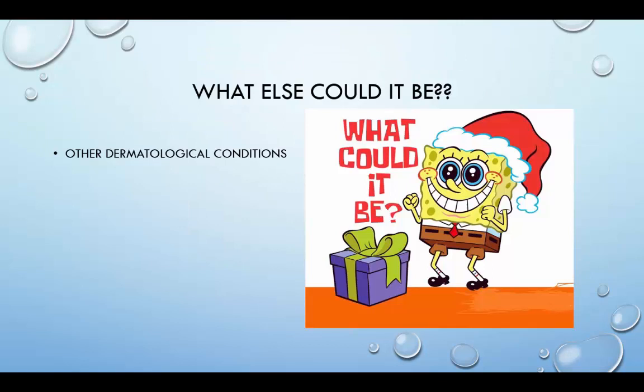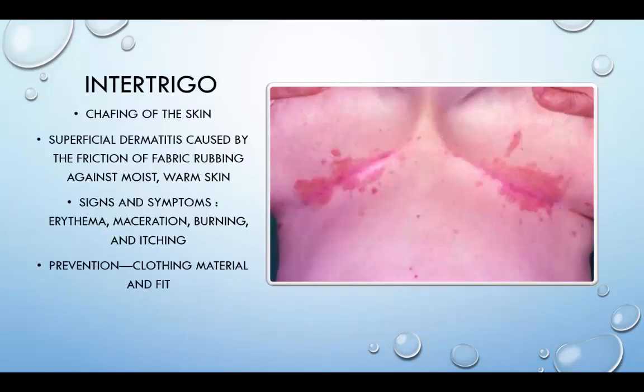Intertrigo is chafing of the skin — superficial dermatitis caused by the friction of fabric rubbing against a moist, warm surface of the skin. This condition may occur between the creases of the neck, in the axillary or buttock area, or beneath large breasts, but is primarily seen in the groin region in individuals with muscular thighs or in obese individuals. In severe cases, the skin can become eroded and starts weeping. This can be prevented by wearing soft, loose cotton underwear or wearing shorts with longer legs made of low-friction fabric. Treatment involves the initial application of a cold compress, cleansing daily with mild soap and water, followed by application of a soothing ointment.